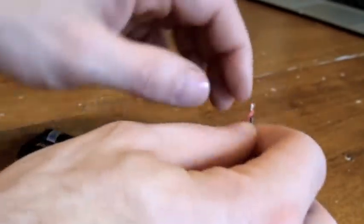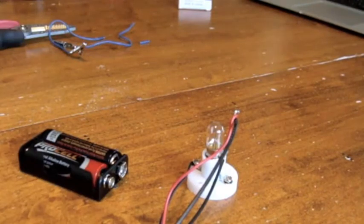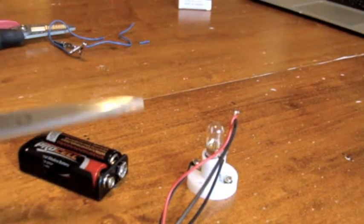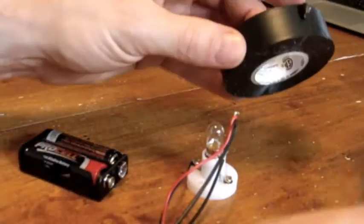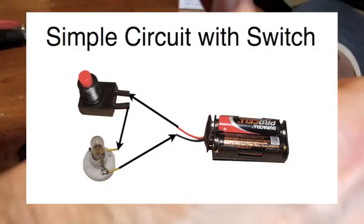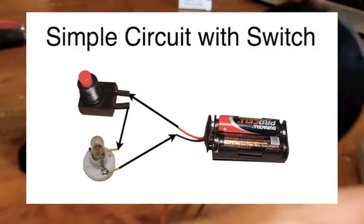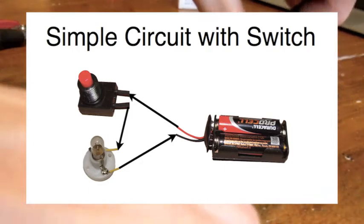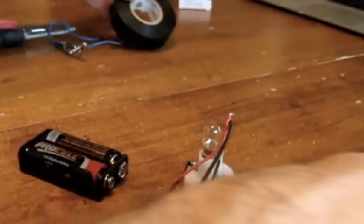To do this, I'm going to twist the two ends of the wires together and then cover them up with tape so I don't get a short circuit later on. The idea of this circuit is to have one big loop going from the batteries to the switch to the bulb, and then back to the batteries.